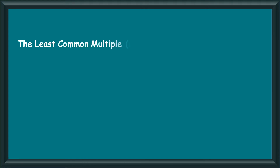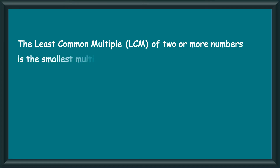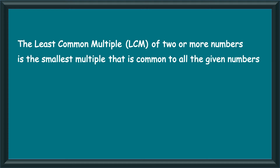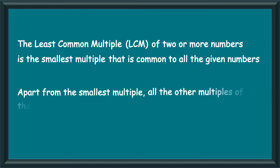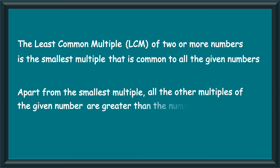Hello children. In this video we are going to learn the properties of LCM. You have already learnt that the least common multiple, or the LCM, of two or more numbers is the smallest multiple that is common to all the given numbers. And you also know that when you write the multiples of a number, apart from the smallest multiple, all the other multiples of the given number are greater than the number itself. From this fact, we get the first property of LCM.